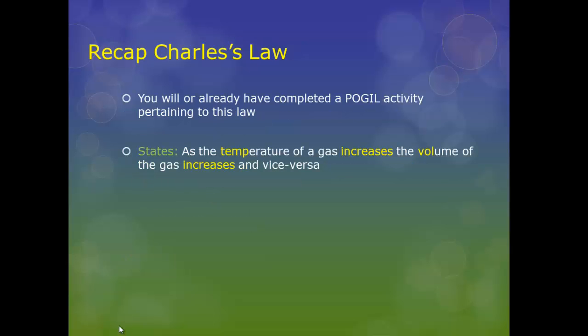In Charles' Law, as the temperature of the gas increases, the volume of the gas increases. That's a direct relationship. As the volume decreases, the temperature decreases. Direct relationship. Pressure and amount of gas remain constant.